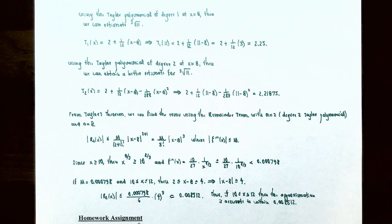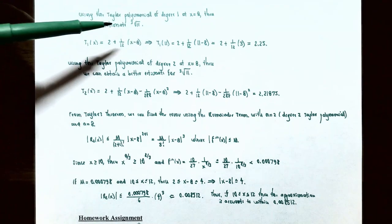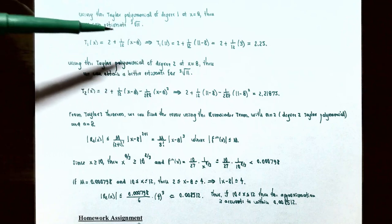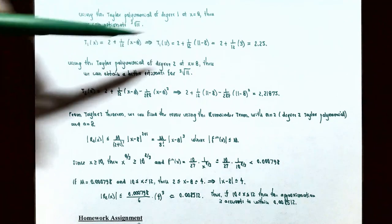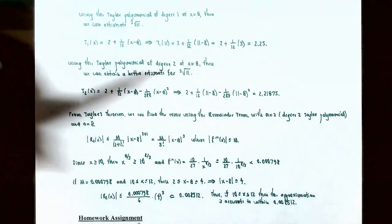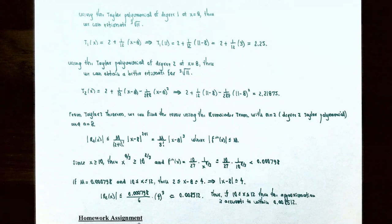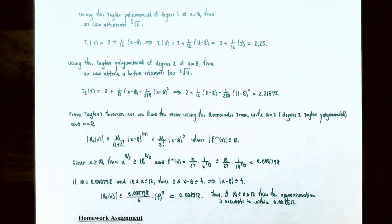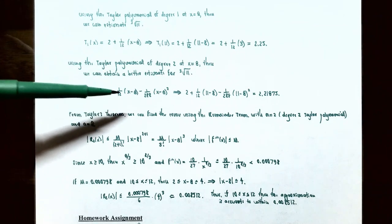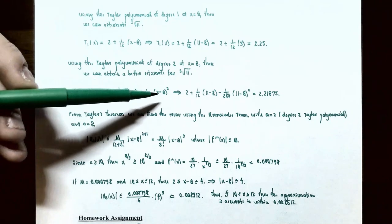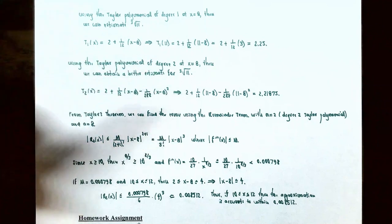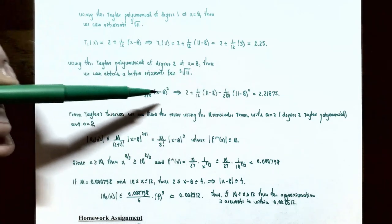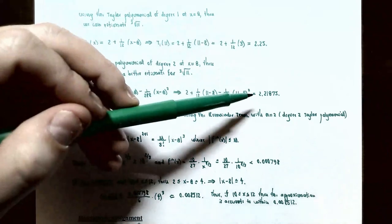Using the first degree Taylor polynomial at x = 11: T_1(11) = 2 + (1/12)(11 − 8) = 2 + (1/12)(3) = 2.25. Using the second degree Taylor polynomial gives a better approximation: T_2(11) = 2 + (1/12)(11 − 8) − (1/288)(11 − 8)² = 2 + (1/12)(3) − (1/288)(9), which is approximately 2.21875.